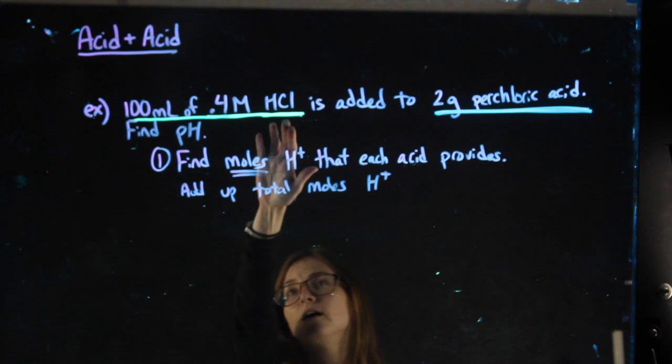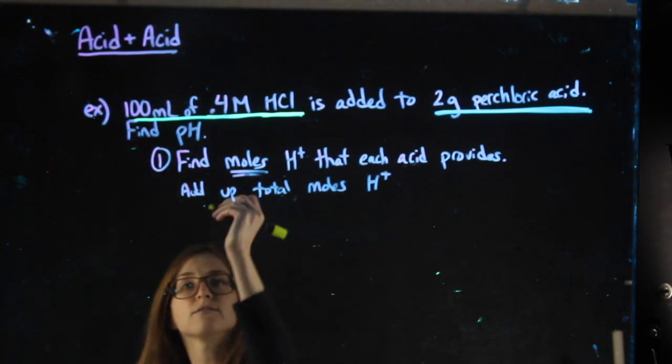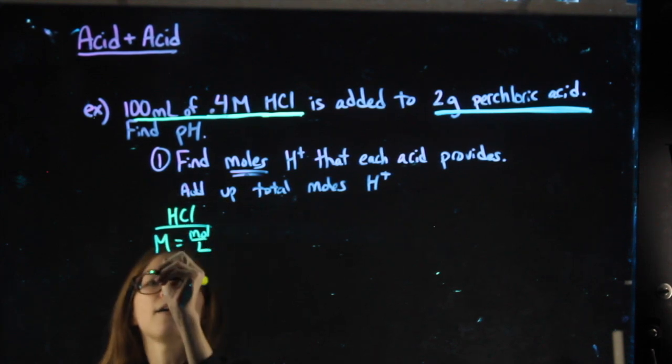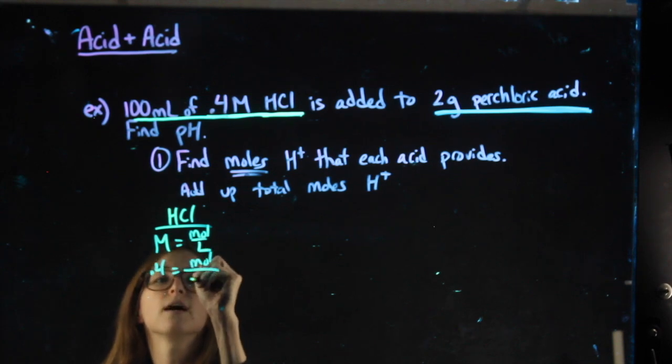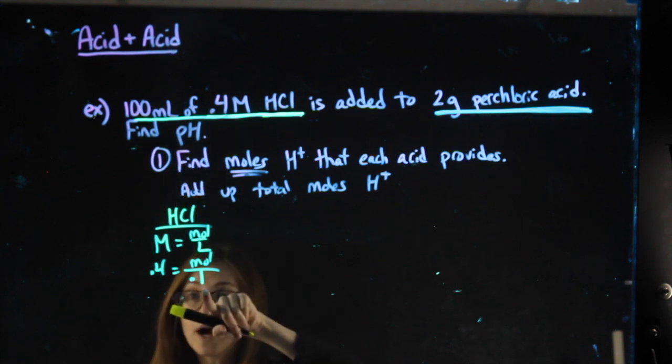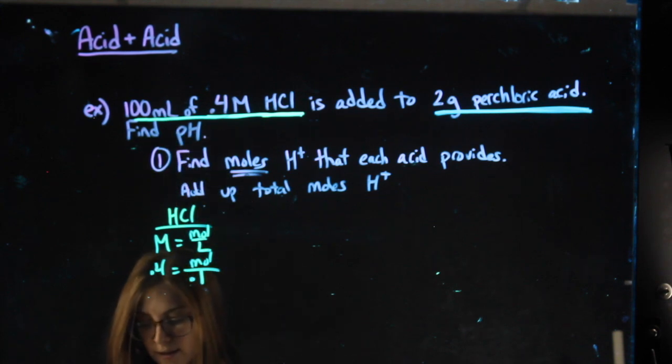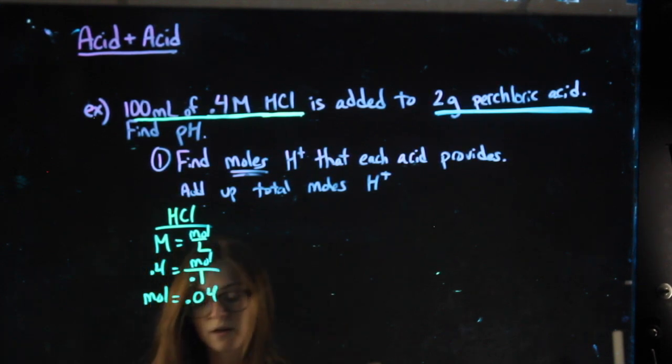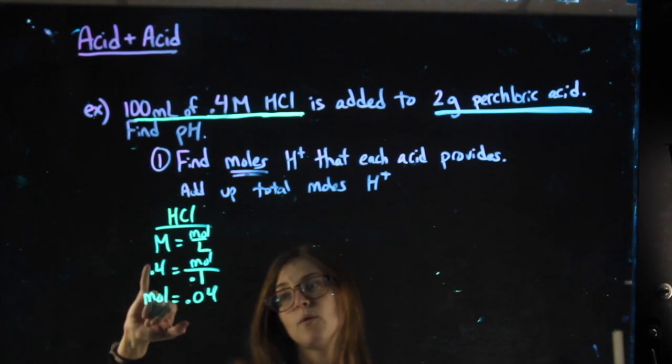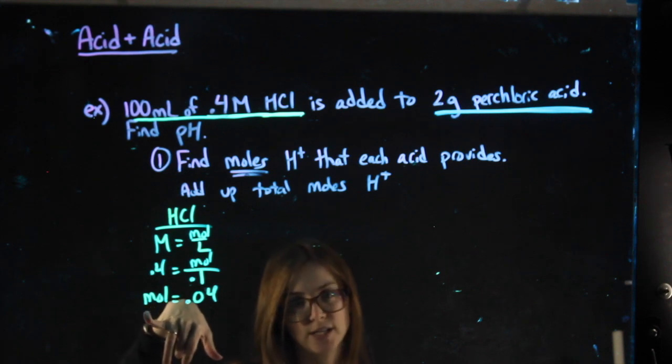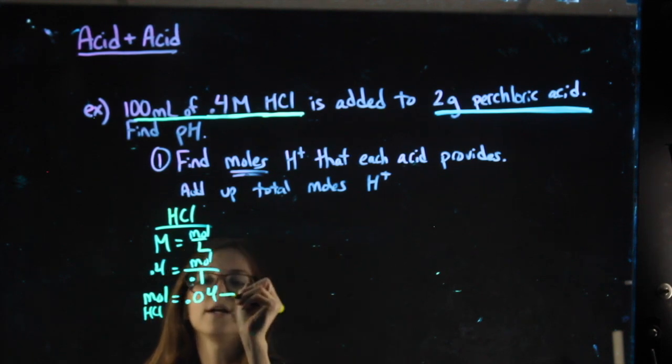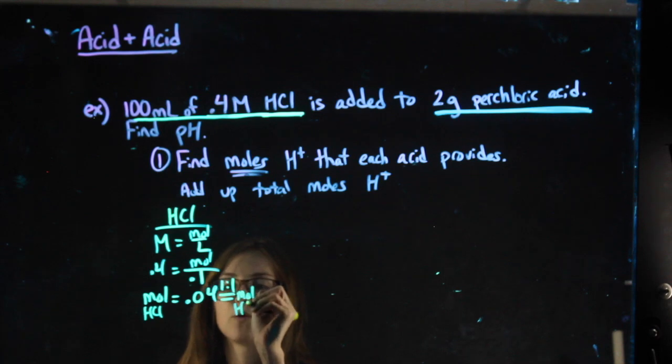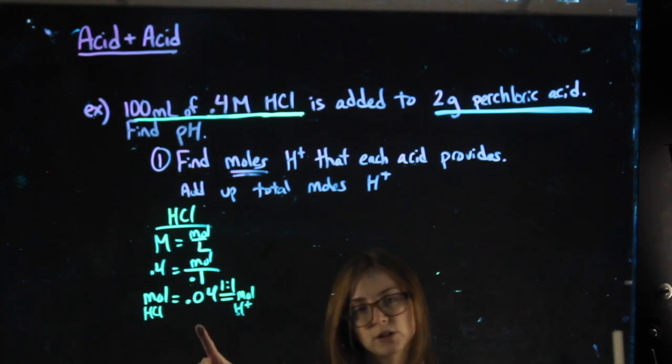For HCl, again, my goal is to get to moles. So I have molarity. For HCl, it might make sense to use the molarity formula. I have my molarity. I'm looking for my moles. Make sure you're using liters, not milliliters. That's why I'm using 0.1. So I do 0.4 times my 0.1. My moles are 0.04. But again, as I always say, go back and say moles of what? Well, this was the molarity of my HCl, so this is the moles of my HCl. Because of a 1 to 1 ratio for the acid, all the strong acids are 1 to 1, we know that this is also equal to our moles of H+. That would be sufficient for showing the work here.